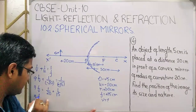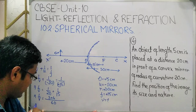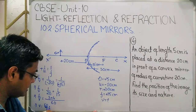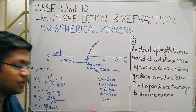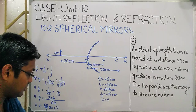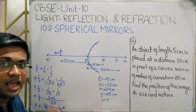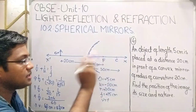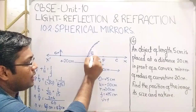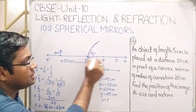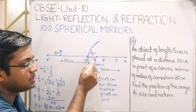Doing the numerical calculation: 1 by v equals 3 plus 4 over 60, giving 1 by v equal to 7 by 60. Therefore v equals 60 by 7 cm. This is approximately 8 cm — since 7 times 8 is 56, it is 8 and 4 by 7 cm, approximately 8 cm. The image is at this position, at a distance 60 by 7 cm behind the mirror.